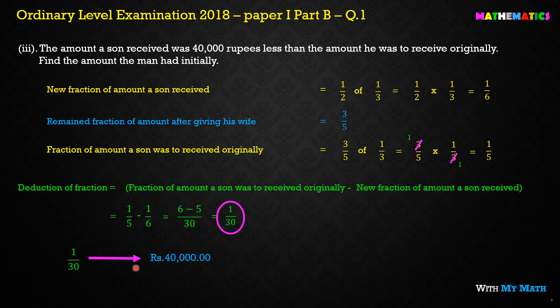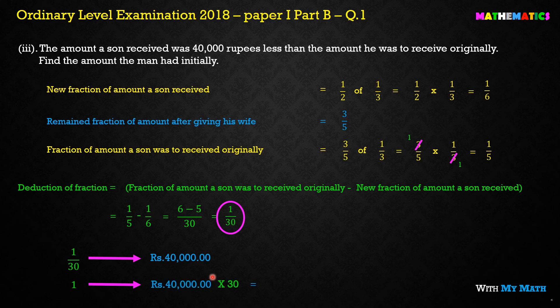The difference of 1/30 represents 40,000 rupees, as stated — the son received 40,000 less than originally intended. So 1/30 equals 40,000, meaning the total is 40,000 multiplied by 30, which gives us 1,200,000 — that is 1.2 million rupees. This is the amount the man originally had before distributing to anybody.